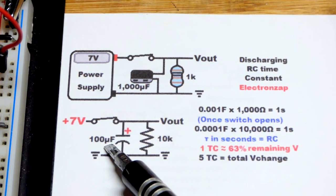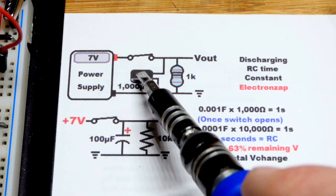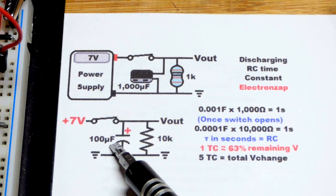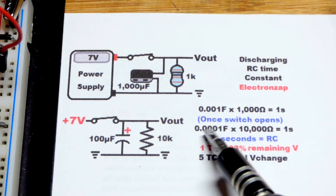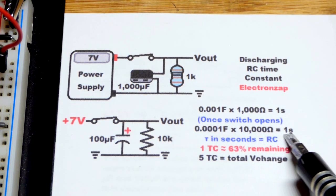Down here we're going to use 100 microfarad. So that's one tenth the capacitance of that one up there. But we're going to discharge it through ten times the resistance right there. So the formula still gives us one second.